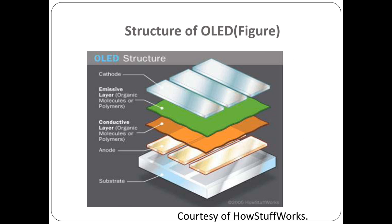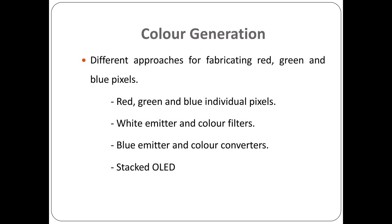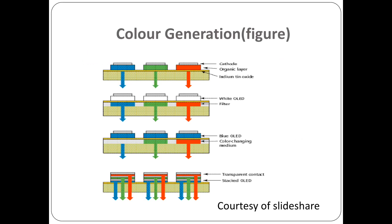Moving to color generation technology — here we get an overall idea of how OLED generates different colors. There are mainly four technologies: first, individual pixels for different colors like red, green, and blue; second, white emitter and color filter; third, blue emitter and color converters; and fourth, stacked OLED. The figure shows all four technologies.